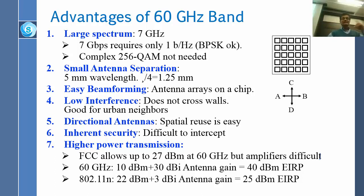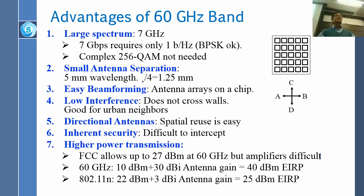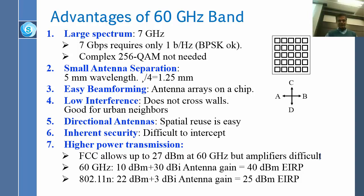Inherent security: because the signal doesn't travel very far, people cannot easily intercept it. For example, unlike Wi-Fi — which I heard is not allowed in the White House because anyone with a sensitive receiver could drive by and listen to all transmissions — 60 GHz is difficult to intercept from outside. High power transmissions are allowed: 27 dBm, which is about one watt. In 802.11n, the limit was 22 dBm with only 3–10 dBi antenna gain; here you can have much more gain.